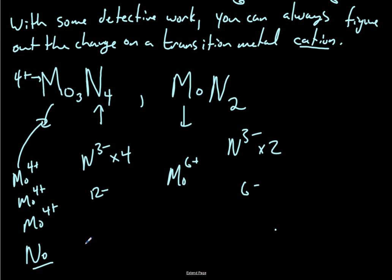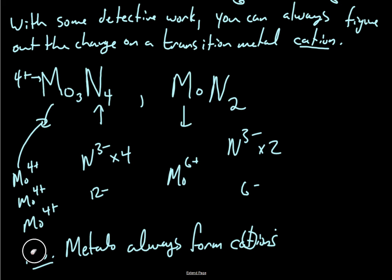No. Metals always form cations. No matter what kind of metals. Transition metals can form multiple different cations. And you, as a detective, have to figure out which ones we're talking about. I'm going to stop that there.